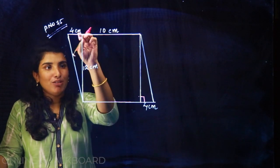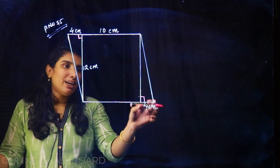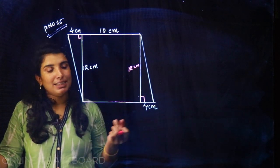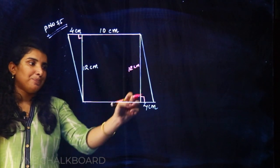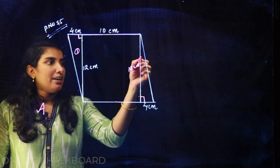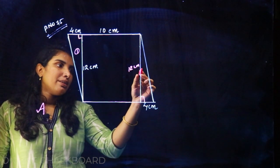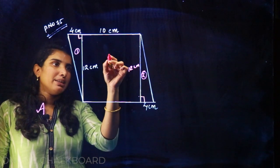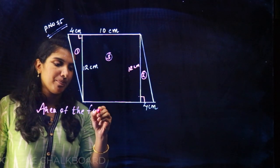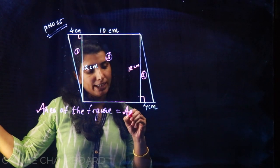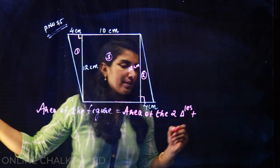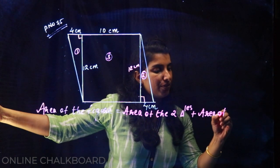And this is about half to four. We have four and twelve — here is four, and this is 12. The two right triangles are in the same direction, and the other direction is in the other direction. It is the rectangle — the rectangle area is L into B. This is the first triangle and the second triangle. Area of the figure is equal to area of the two triangles plus area of the rectangle.